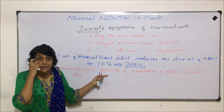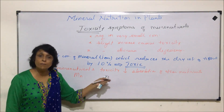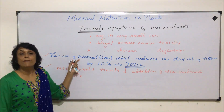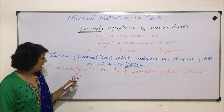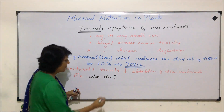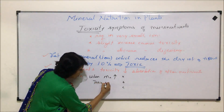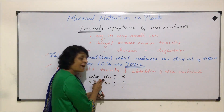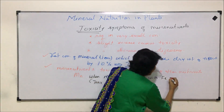We have taken the example of manganese here. We want to understand what the toxicity symptom of manganese would be. If manganese concentration is at a level that reduces dry weight of tissue by 10%, that is considered toxic. It has been observed that when manganese concentration is more, there are three things which occur.